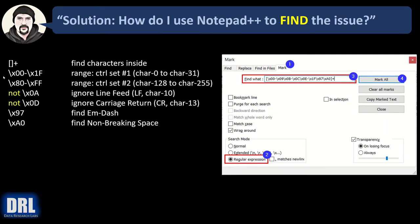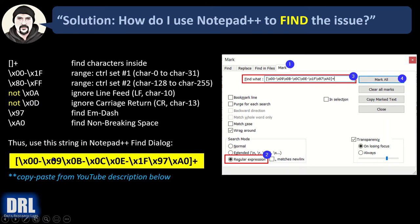What does the regular expression look like? It uses brackets to say find any of the characters inside. It uses hexadecimal backslash-x, 00 to 1F, which covers character range 0 to 31, or 80 to FF for 128 to 255 — that's if you really want to block off all the yellows and all the reds. We exclude the line feed and carriage return, but find the M-dash and the non-breaking space. So we use this regular expression with a range, another range, another range, and then those two specific characters. Just copy-paste this string in — it's also in the YouTube description.